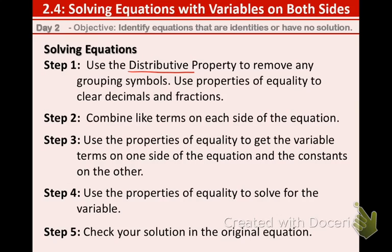Step 2, we are going to combine like terms on each side of the equation. Step 3, we are going to use properties of equality to get the variable terms on one side of the equation and the constants on the other.